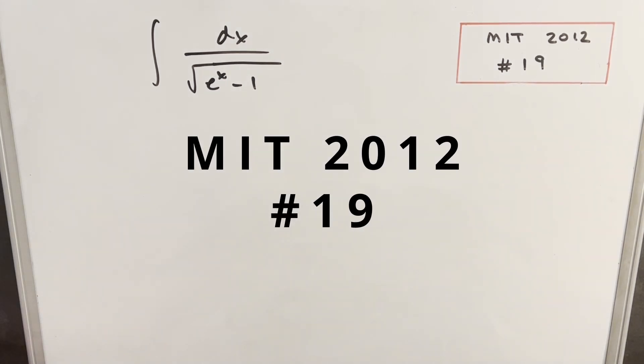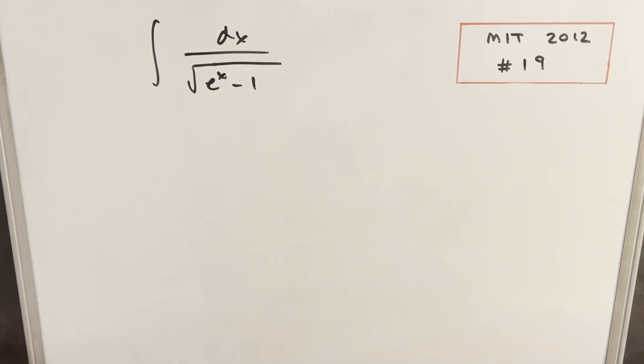Hey, we have here another integral from MIT 2012, problem 19. We have the integral of dx over the square root of e to the x minus 1.